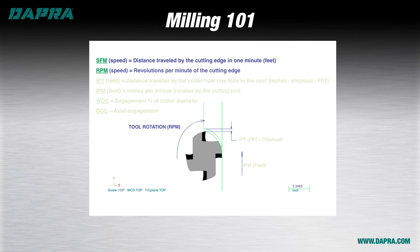Our first two terms are both related to cutting tool speed. SFM stands for surface feet per minute and is very simply the number of linear feet that the cutting edge travels in one minute. This number is a constant, dependent primarily on the material being machined. This is the number that you'll be given in the catalog speed and feed chart. No matter what diameter tool you're using, the SFM remains the same.